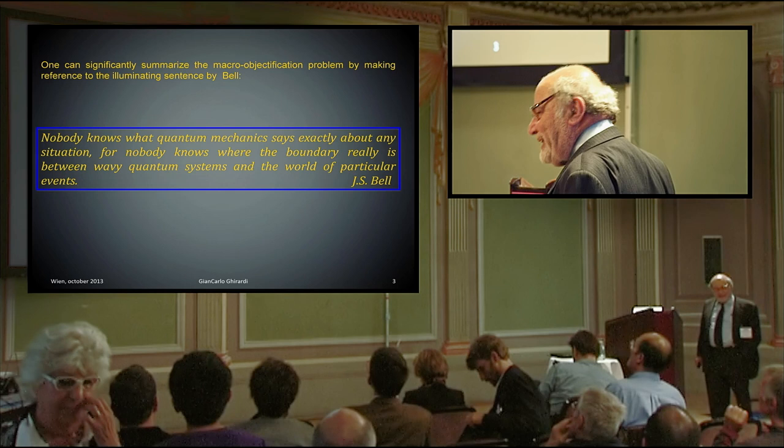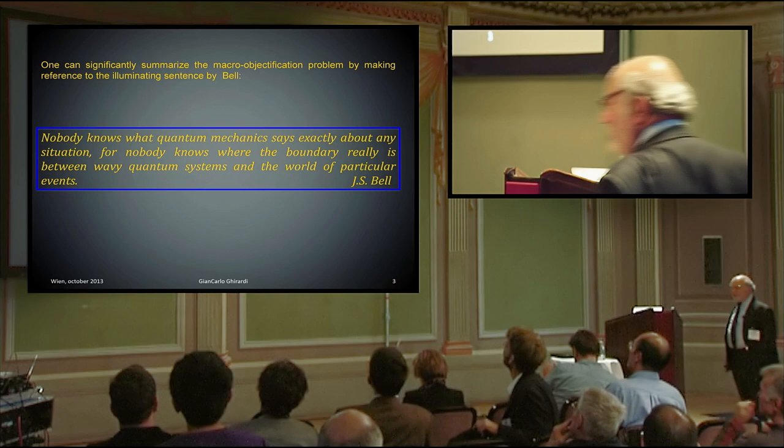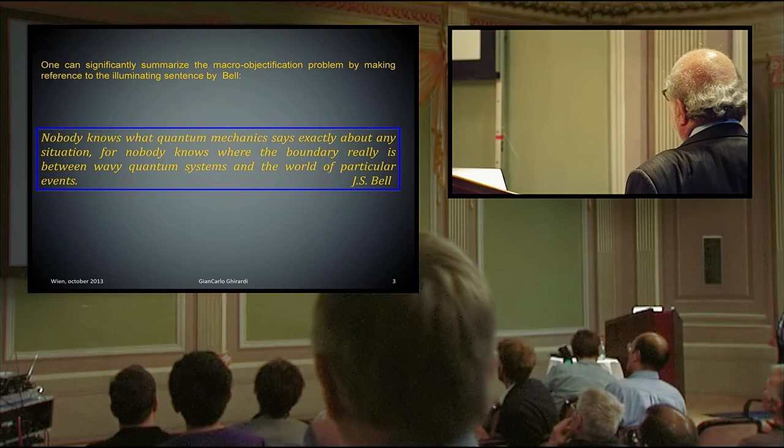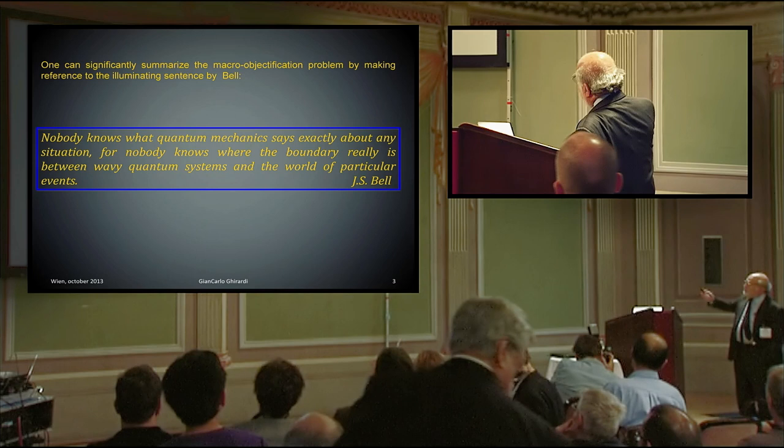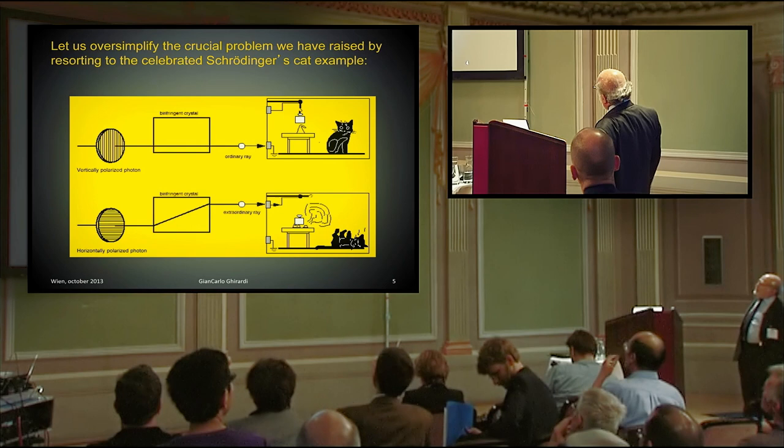A problem which, in my opinion, has been clearly and appropriately summarized by this illuminating sentence by John Bell. Nobody knows what quantum mechanics says exactly about any situation, for nobody knows where the boundary really is between the very quantum system and the world of particular events. And we have seen today also quantum, classical, reversible, irreversible, and this kind of thing.